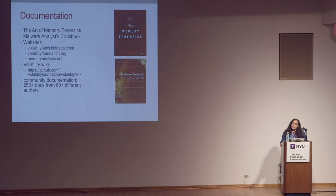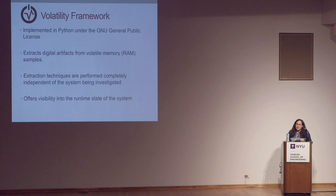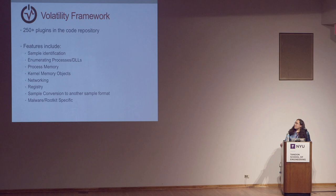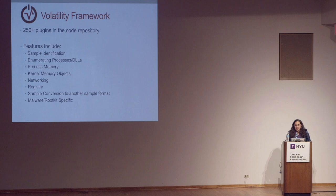The volatility project is open source, written in Python, under the GNU version 2 license, so it's very useful to read the code and extend it however you want. If you don't want to write your own code, we have more than 250 plugins that can also be extended and inherited. There are several different types of plugins covering features like sample identification, process enumeration, kernel level analysis, registry, and malware-specific functions.